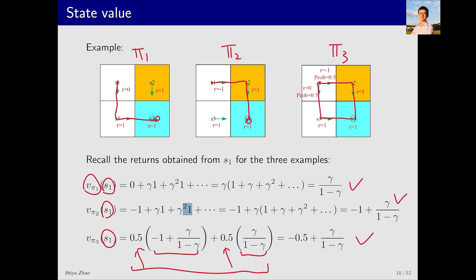It becomes evident that v_π1 is the highest, v_π2 is the lowest, and v_π3 is in the middle. Therefore, we know the first policy is the best, and the second policy is the worst.